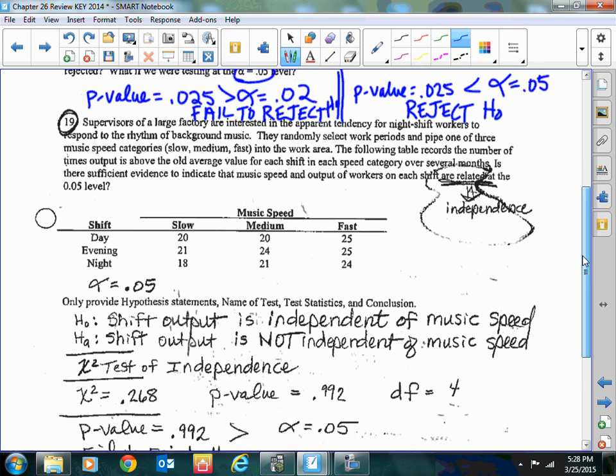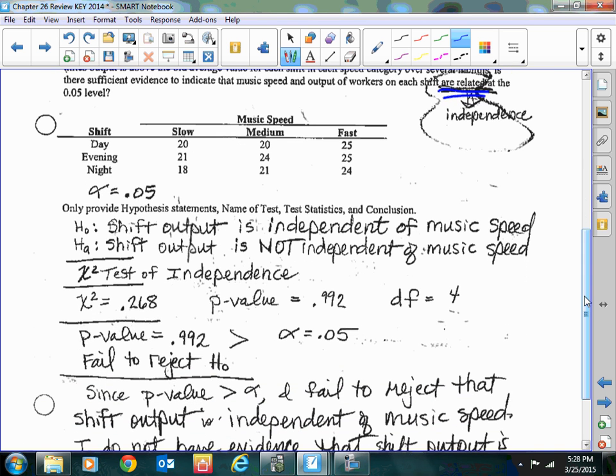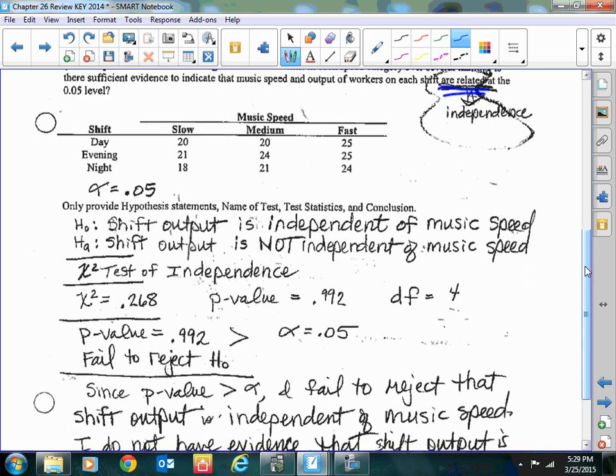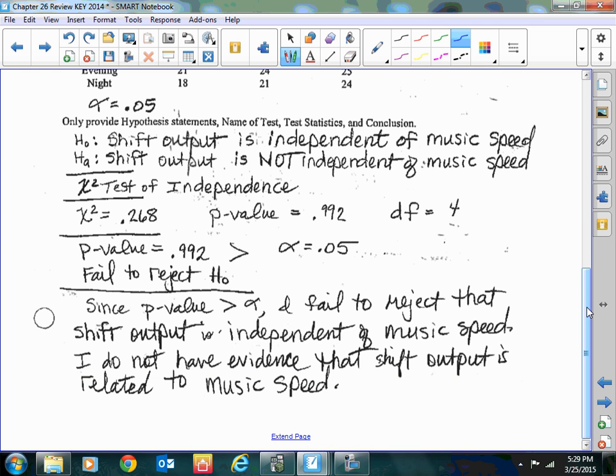Number 19 is a problem. Let me refresh my memory on this one. This was the night shift workers, and they had the different shifts - the day, evening, and night. They had these work periods, and I think what they did was they played different speeds of music and then compared what was the output that the workers were then having depending on that. Are they related? Sounds to me like: is music speed and shift production independent of each other? It does say 0.05 level of significance, so that's alpha. Here's my null hypothesis: Shift output is independent of music speed, and the alternative: shift output is not independent of music speed. It is a chi-squared test of independence.